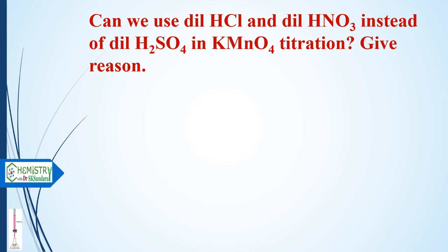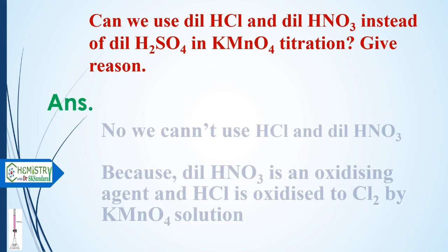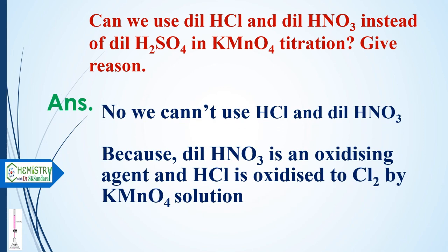Can we use dilute HCl or dilute nitric acid instead of dilute sulfuric acid? No, we cannot. Dilute HNO3 is itself an oxidizing agent, and HCl is oxidized to chlorine by the KMnO4 solution. That is why neither can be used — only dilute sulfuric acid should be used in permanganometric titrations.